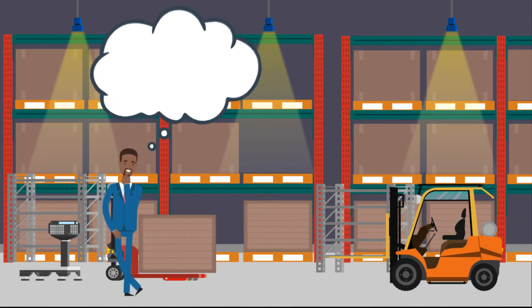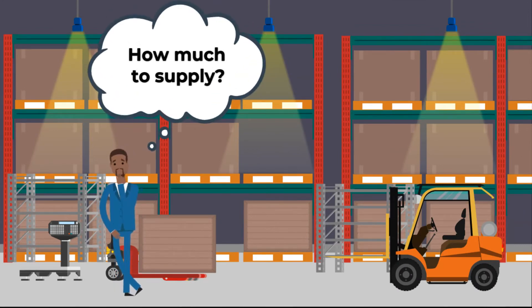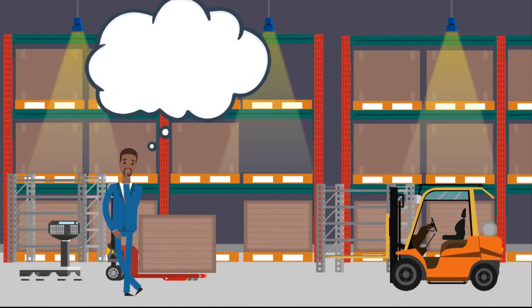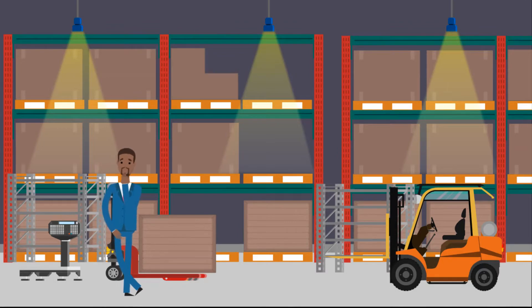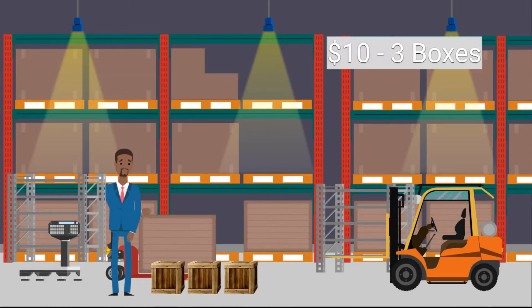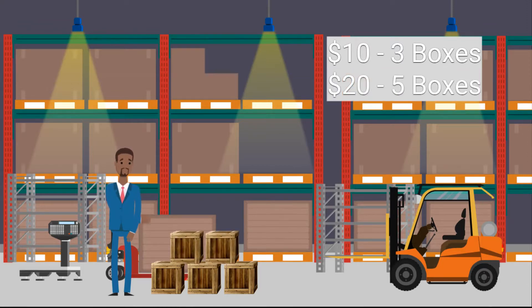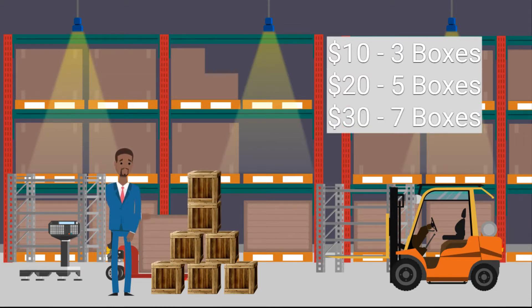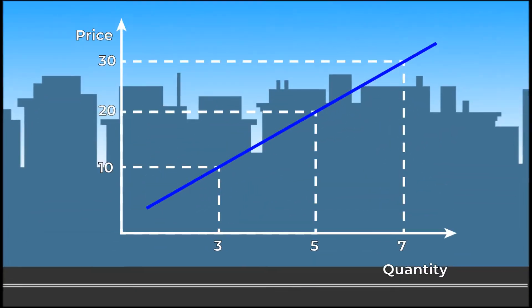How much of a product should I supply? The magic question asked by all suppliers. Producers tend to want to maximize their profit — they try to do this by maximizing the quantity sold. In this example, a supplier is willing to sell three boxes of goods at ten dollars, five boxes at twenty dollars, and seven boxes at thirty dollars.